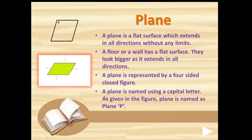A plane is named using a capital letter. As given in the figure, the plane in the first diagram is named as plane P, where P is a capital letter. So, a plane is a flat surface which extends in all directions without any limit. We can name a plane using a capital letter — plane P, plane A, plane X, plane C, or any alphabet from A to Z.